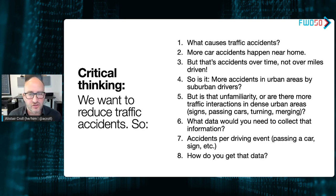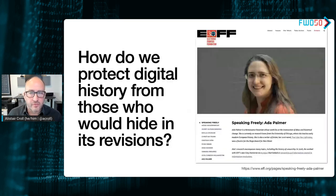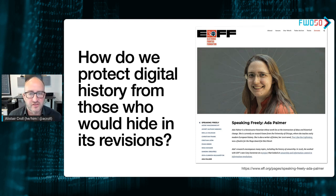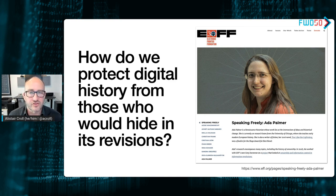Another thing I really want to bring up is the incredible risk of revisionist history in data. As mentioned earlier, it's hard to change physical things because they're permanent, but it's easy to change digital things because they're transient. We have concrete proof of this happening — we've discovered unmarked graves throughout Canada that were essentially erased from information, and we can only find them because the physical attributes are still there. The fact that things are searchable with precision means they can also be erasable with precision.